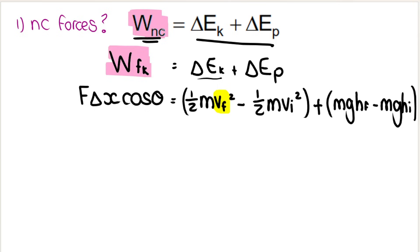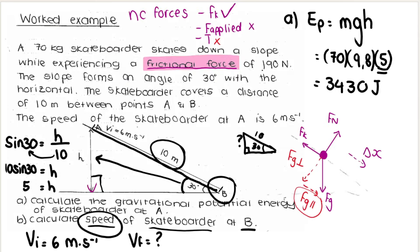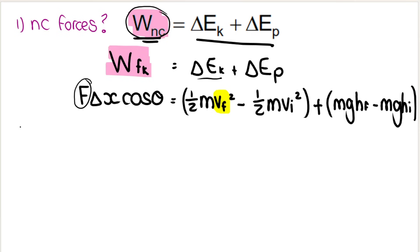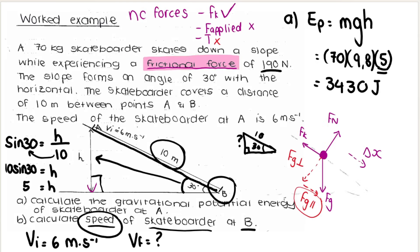Remember, this work done by non-conservative forces, the only non-conservative force is friction. So to calculate the work done by friction, we need the frictional force, which was given to me in the question, 190. Remember, when you calculate the work done by friction, you don't sub in friction as negative. You always sub it in as a positive. Then displacement. How far did this person skate down the slope? This person skated 10 meters down the slope. 10 meters.